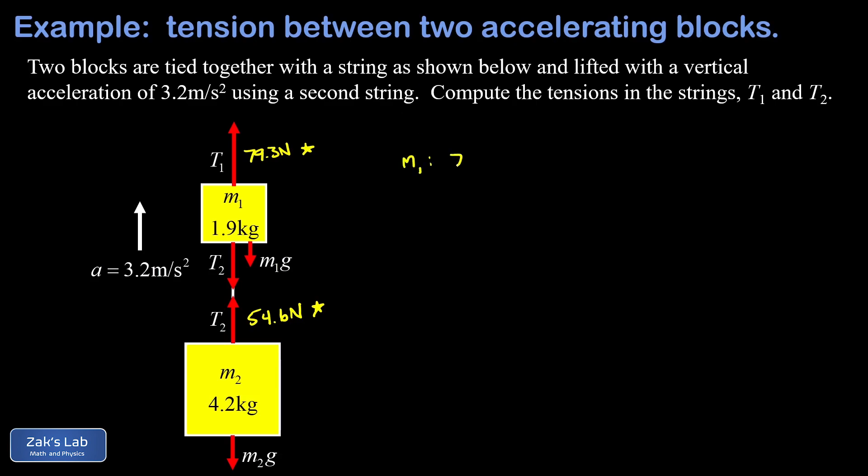In that force analysis, I get 79.3 newtons pulling up, T2 pulling down so negative 54.6 newtons, and m1 g pulling down. All of that equals m1a, so that's 1.9 kilograms times a. We're just going to check that a comes out to the right number—it should be 3.2 meters per second squared.